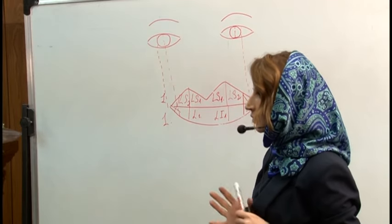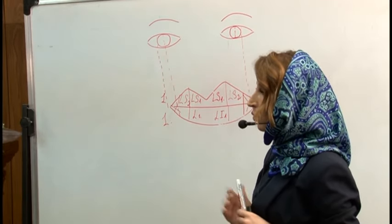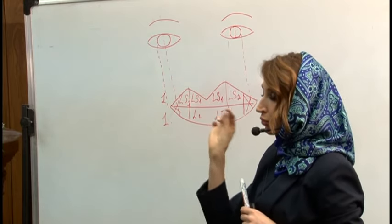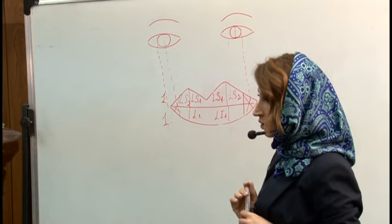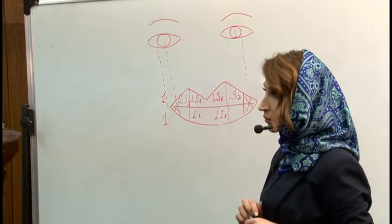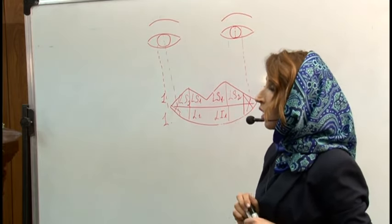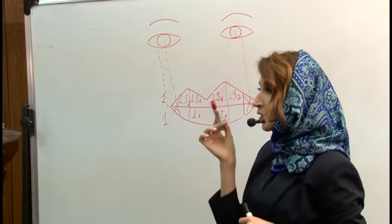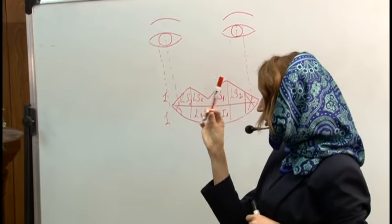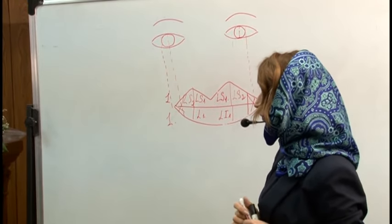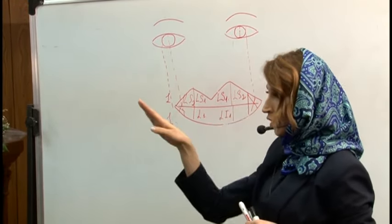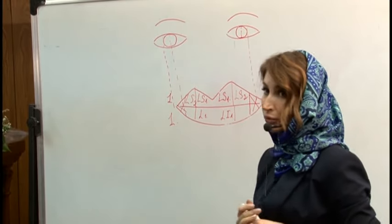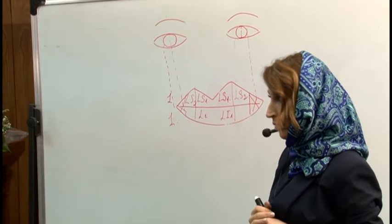We work only with the upper lip. For the lower lip, only a little micro bolus in the central part. Very important: if we have a gingival smile with a very thin hyperactive upper lip structure, like in this picture, you should in one session combine the injection with botulinum toxin. It is very important to achieve a good result.